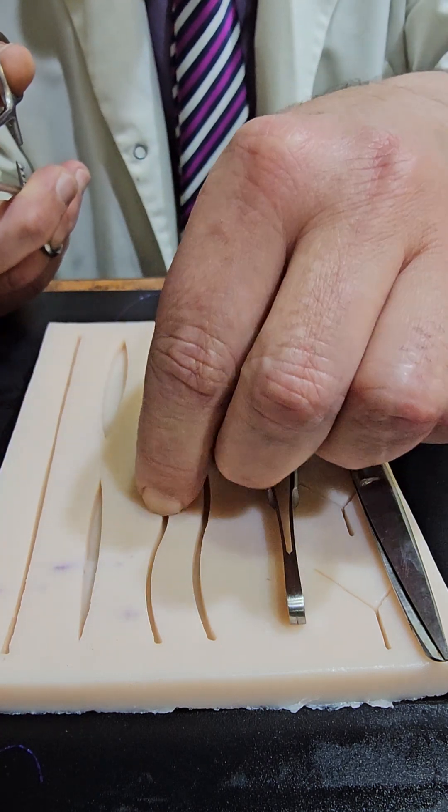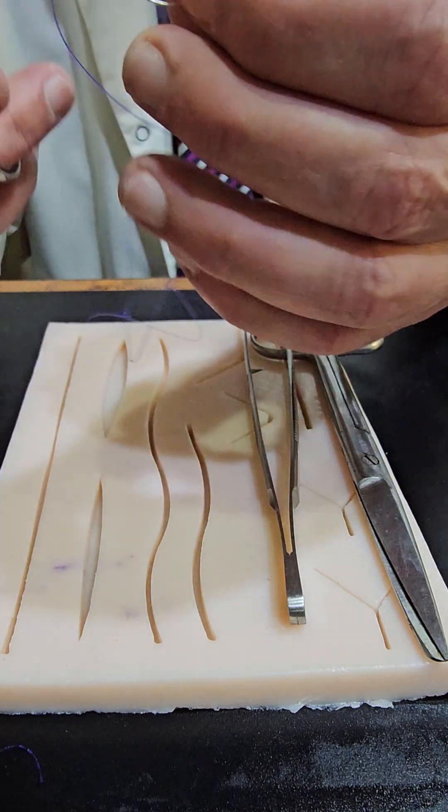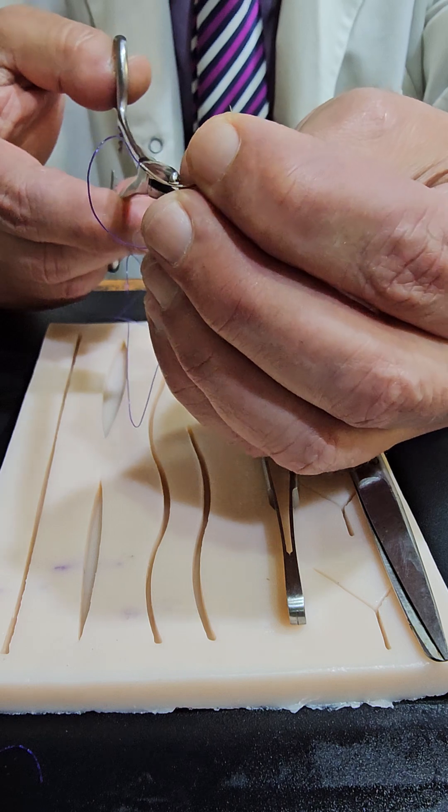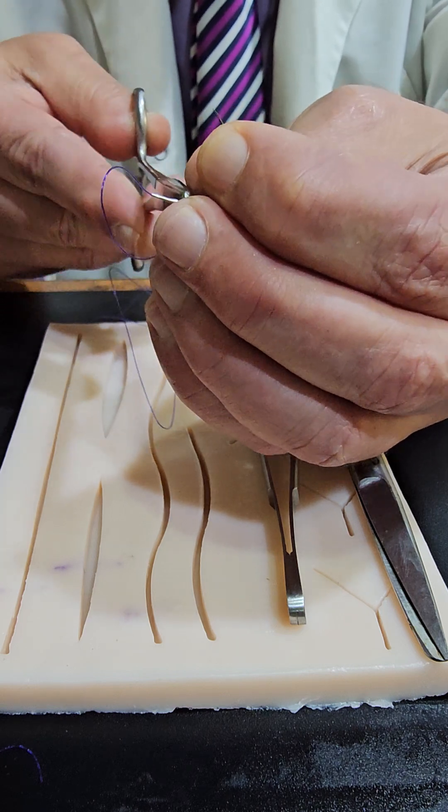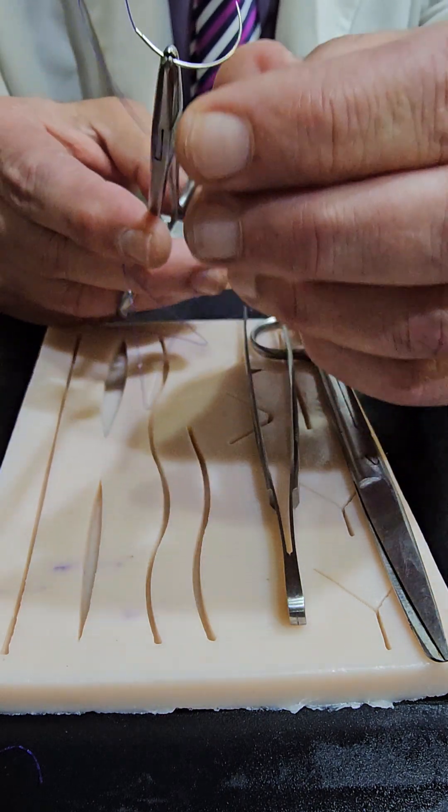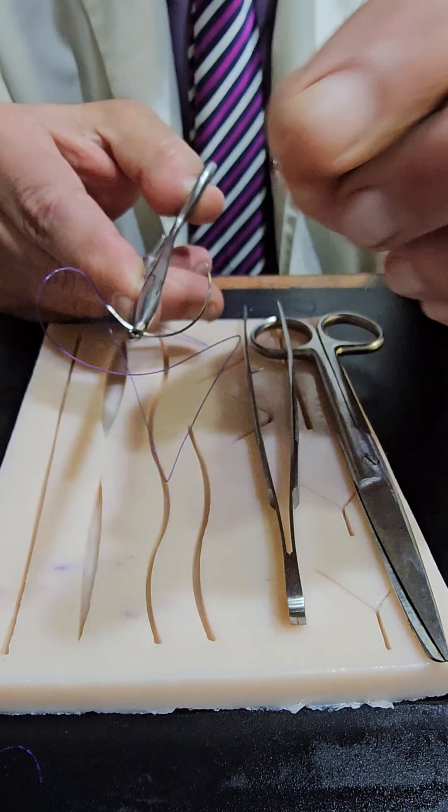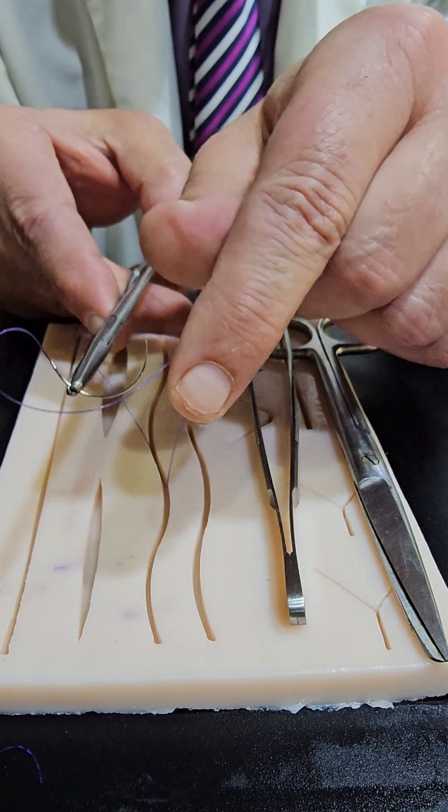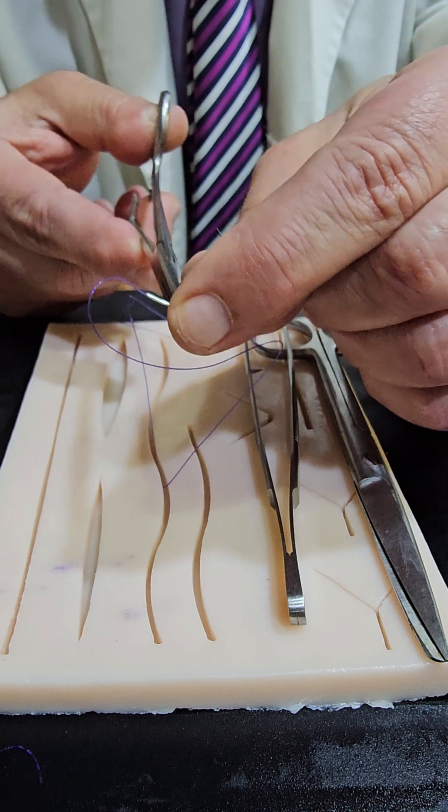How to load the needle holder? This is the needle and suture. Between the upper third of the needle and the middle third like that. So between the upper third and middle third. So one third to the right, two third to the left. Like this one.